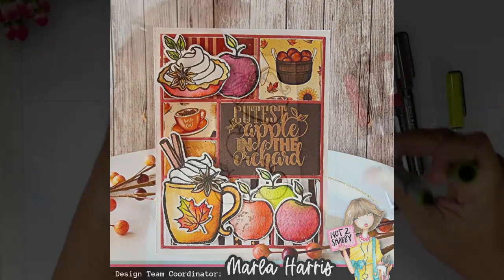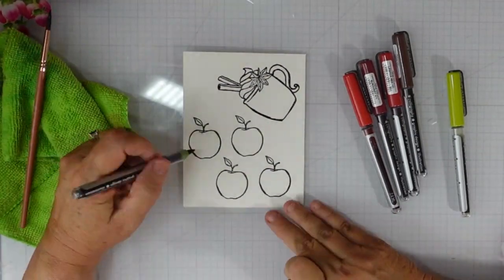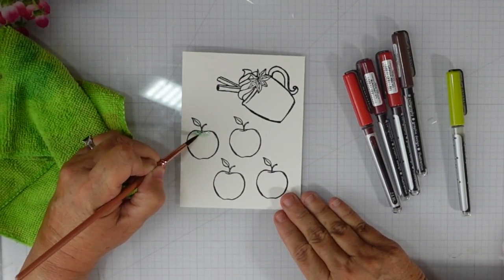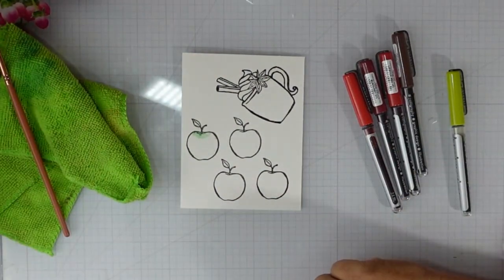I have stamped my images using Versafine black onyx ink onto Fabriano Artistico watercolor paper. I used images from the Full of Thanks stamp set that was part of the September box of the month.